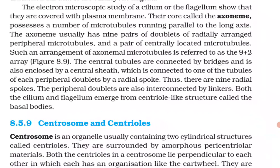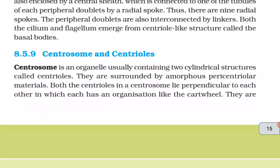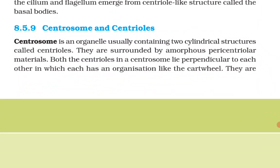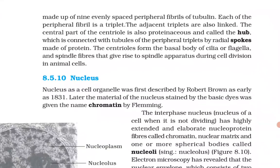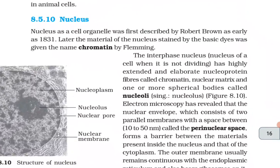Both the cilium and flagellum emerge from centriole-like structures called basal bodies. Centrosome and centrioles: centrosome is an organelle usually containing two cylindrical structures called centrioles, surrounded by amorphous pericentriolar materials. Both centrioles in a centrosome lie perpendicular to each other, each having an organization like a cartwheel. They are made up of nine evenly spaced peripheral fibrils of tubulin, each peripheral fibril being a triplet. The adjacent triplets are also linked. The central part of the centriole is proteinaceous, called the hub, connected to the tubules of the peripheral triplets by radial spokes made of protein. Centrioles form the basal body of cilia or flagella, and spindle fibers that give rise to the spindle apparatus during cell division in animal cells.